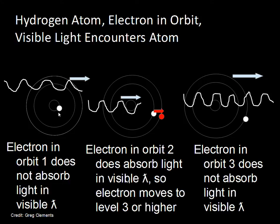Here we have a hydrogen atom with light coming through. If the electron is in the first orbit of the hydrogen atom, visible light does not have enough energy to be absorbed and move the electron to the second level — so the visible light passes through. The hydrogen atom will have its electron in the first orbit if the star has a very cool atmosphere. The electron will be in that lower level.